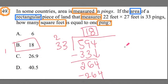So you could say that one ping, one ping is equal to 18 feet squared. The answer is B.